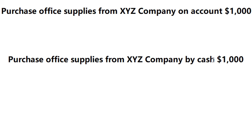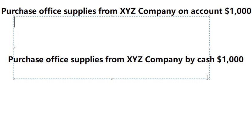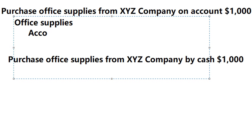So now I will show you how to answer. We put about office supplies, and this is about on account, which means we don't have enough money to purchase this one, so we have accounts payable. I will put 1000 here and 1000 here.